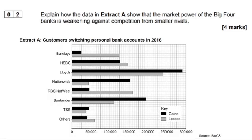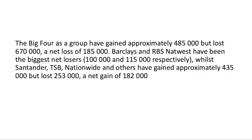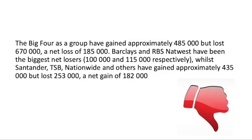Here's another example from a different year: 'Explain how the data in Extract A shows that the market power of the big four banks is weakened against competition from smaller rivals.' We have the banks, their gains, and their losses. One answer uses the data: 'The big four as a group gained approximately 485,000 but lost 670,000 — a net loss of 185,000. Barclays and RBS/NatWest were the biggest net losers at 100,000 and 115,000 respectively, while Santander, TSB, Nationwide and others gained approximately 435,000 but lost 253,000, a net gain of 182,000.' This answer uses data and has evidence, but does it provide an explanation? Does it directly tackle what the question is asking? It's not clear.